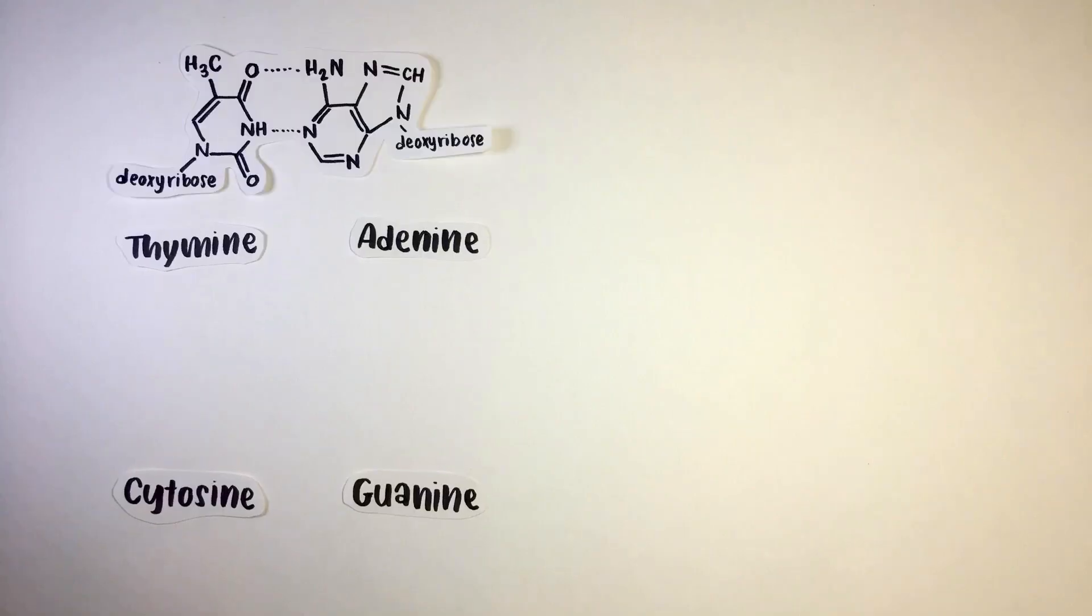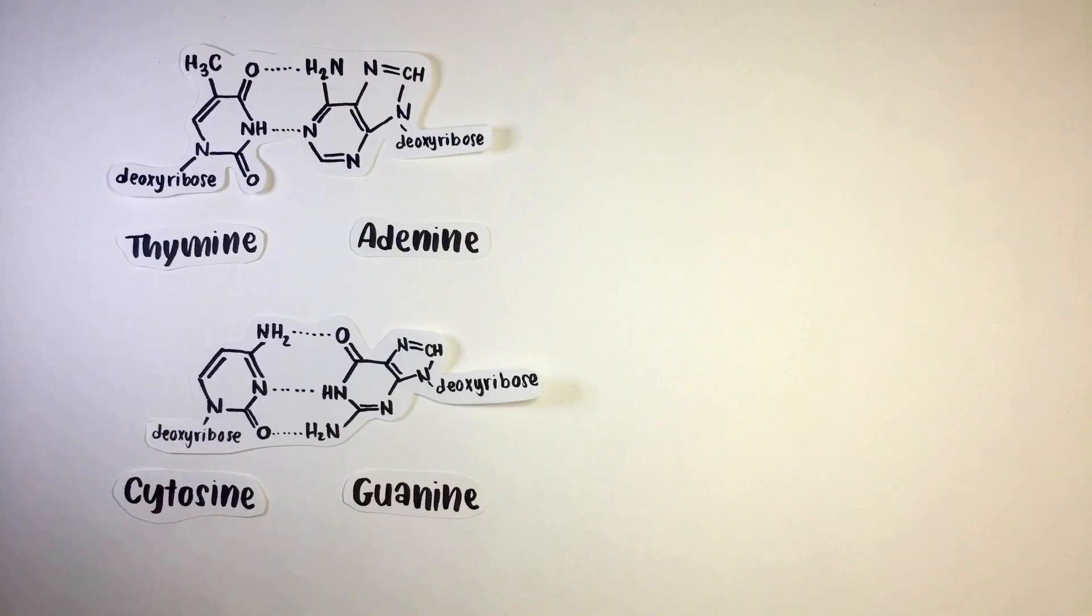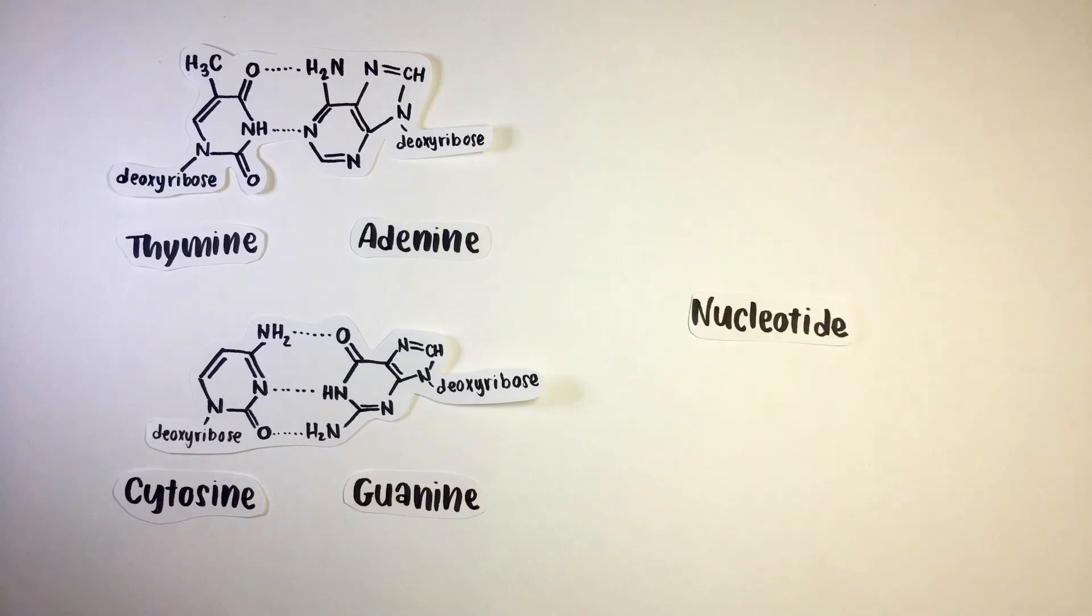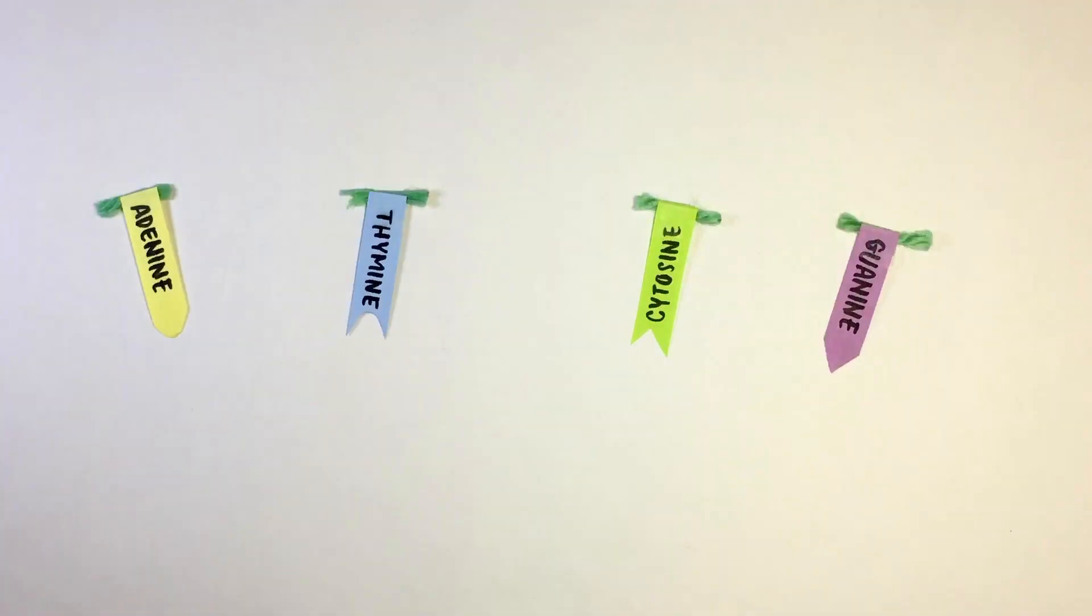Before we begin, I want to clarify that although the molecular structure of thymine, adenine, cytosine, and guanine would look something like this, and a nucleotide like this, for the purposes of this video, the nucleotides will be simplified to simple shapes.